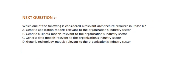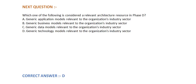Next question: which one of the following is considered a relevant architecture resource in Phase D? Option A, generic application models relevant to the organization's industry sector. Option B, generic business models relevant to the organization's industry sector. Option C, generic data models relevant to the organization's industry sector. Option D, generic technology models relevant to the organization's industry sector. The correct answer is option D.